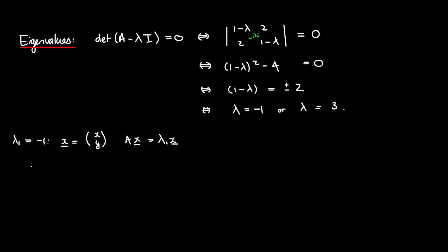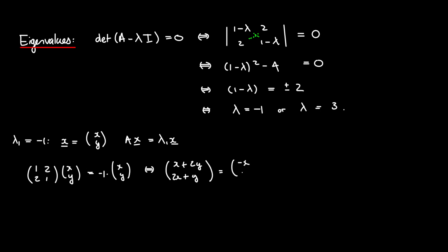In our case, this becomes solving for (x, y) in a system of equations. With lambda₁ = -1, we have A*x equal to -1 times (x, y), which gives x + 2y = -x and 2x + y = -y. Bringing x over, the first equation gives us 2x + 2y = 0.